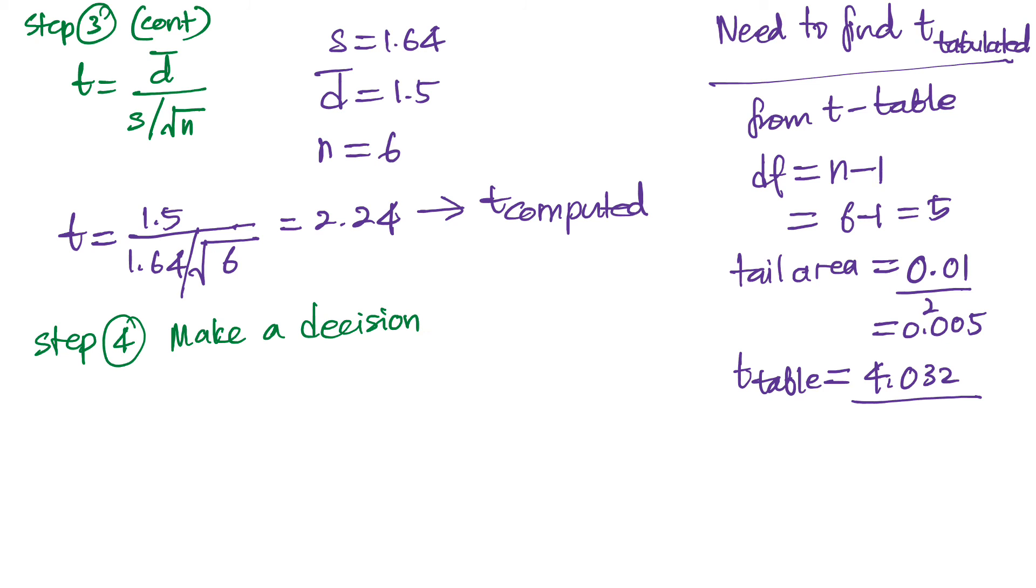The next step is to make a decision based on the comparison between the t-computed and the t-table. So since the t-computed is 2.24 and the t-tabulated or the t-table is 4.032, and obviously the t-computed is less than the t-tabulated, so the decision that we can make here is to accept the null hypothesis.